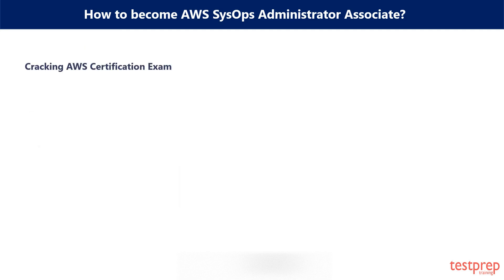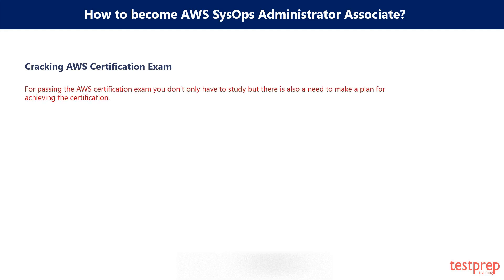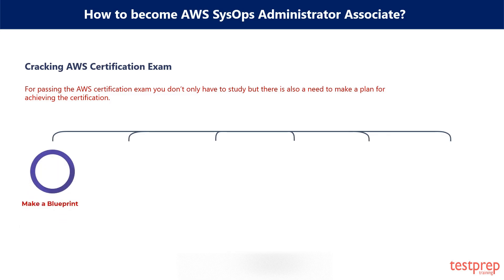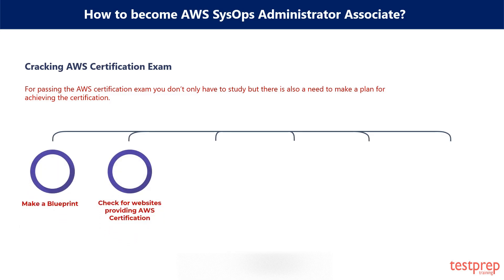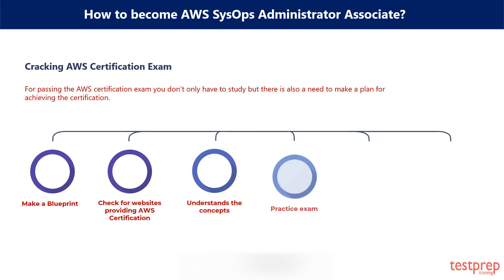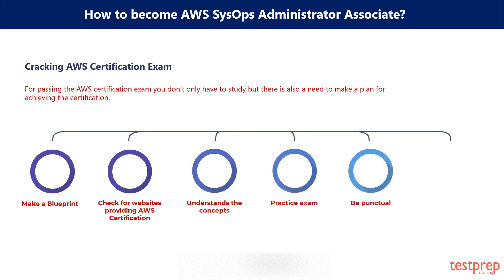Cracking the AWS Certification Exam. For passing the AWS certification exam, you don't only have to study — there is also a need to make a plan for achieving the certification. Steps include: first, make a blueprint; second, check for websites providing AWS certification; third, understand the concept; fourth, practice exam and tests; fifth, be punctual; sixth, give the exam.